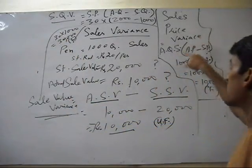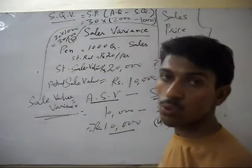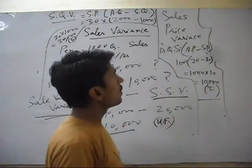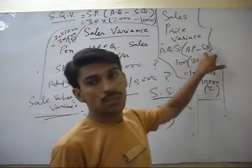Sales price variance is actual quantity sold multiplied by the difference between actual price minus standard price.